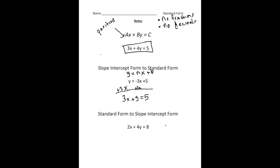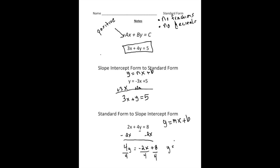In the last example, we have an equation already written in standard form, but now we need to write it in slope intercept form. We want to transform the equation so it's written in y equals mx plus b format. We need to get y by itself, so I'm going to first take away two x from both sides. When I do that, I now have four y equals negative two x plus eight. Then I'm going to divide both sides by four, and I get y equals negative one half x plus two. This equation written in slope intercept form is the exact same equation as two x plus four y equals eight, which is the original written in standard form.